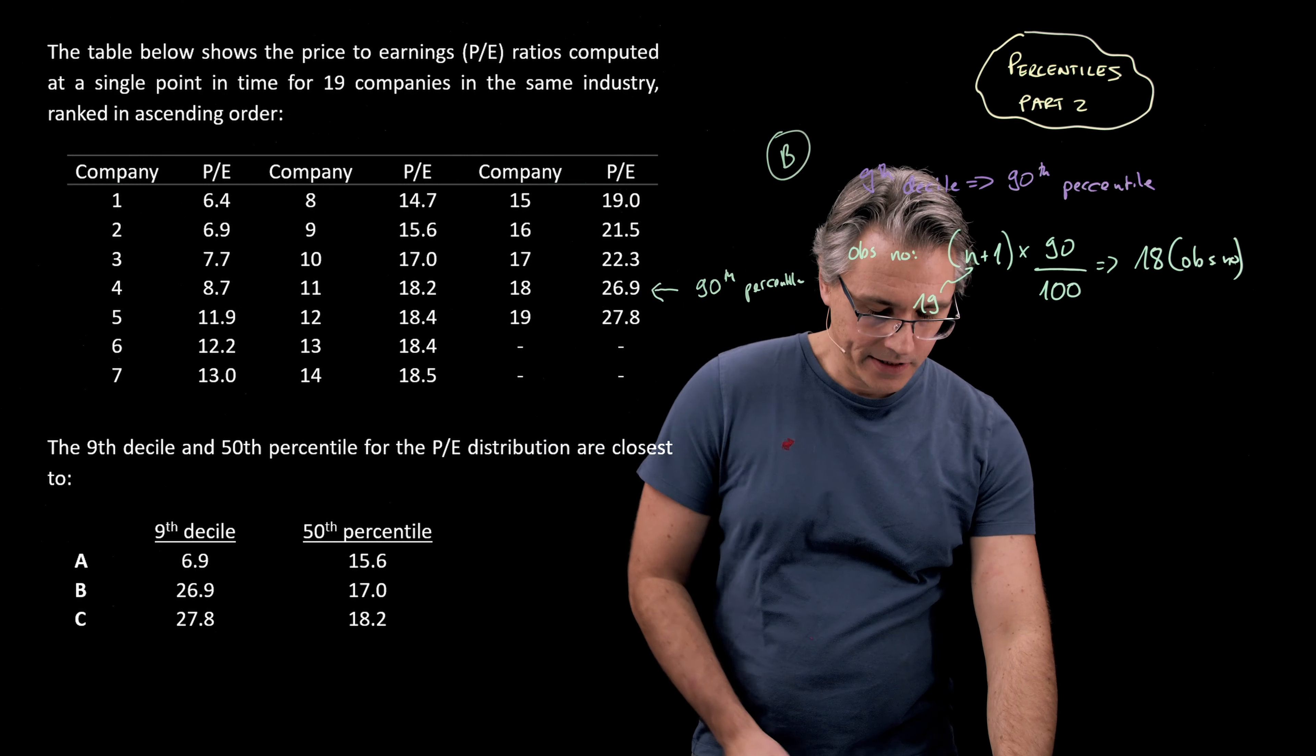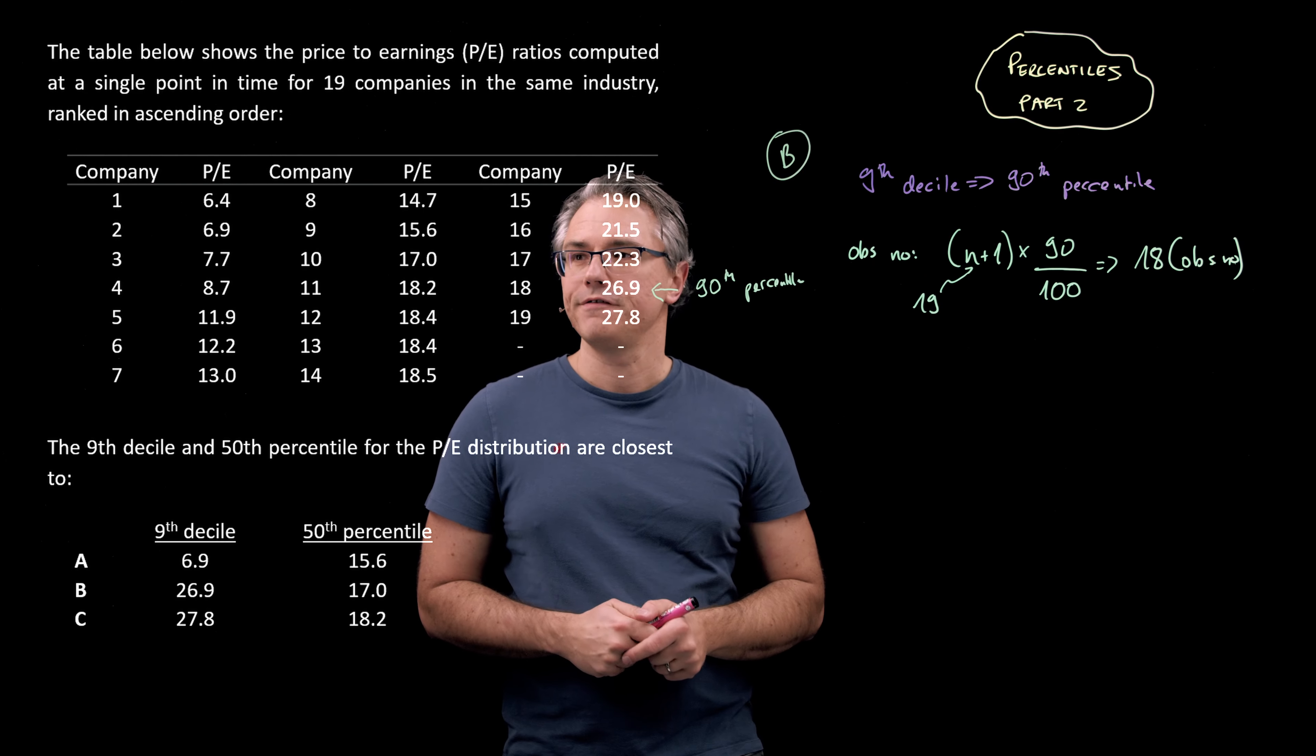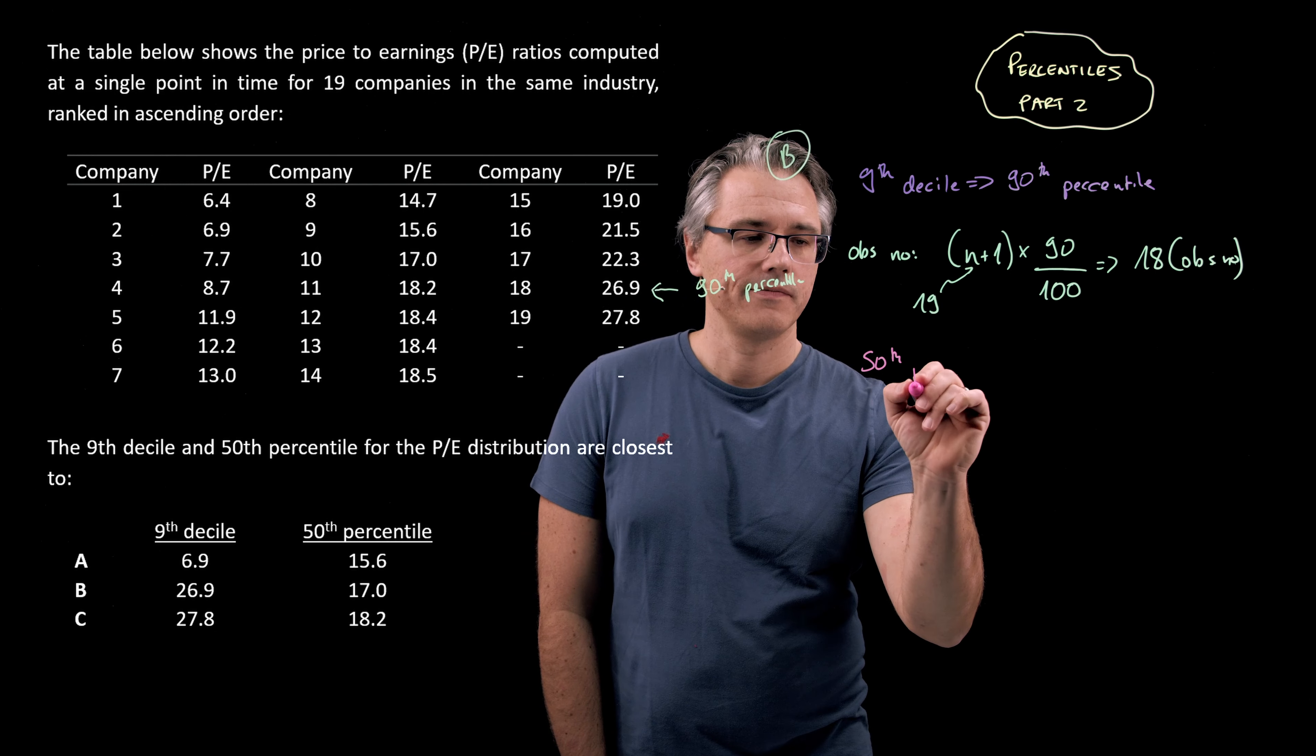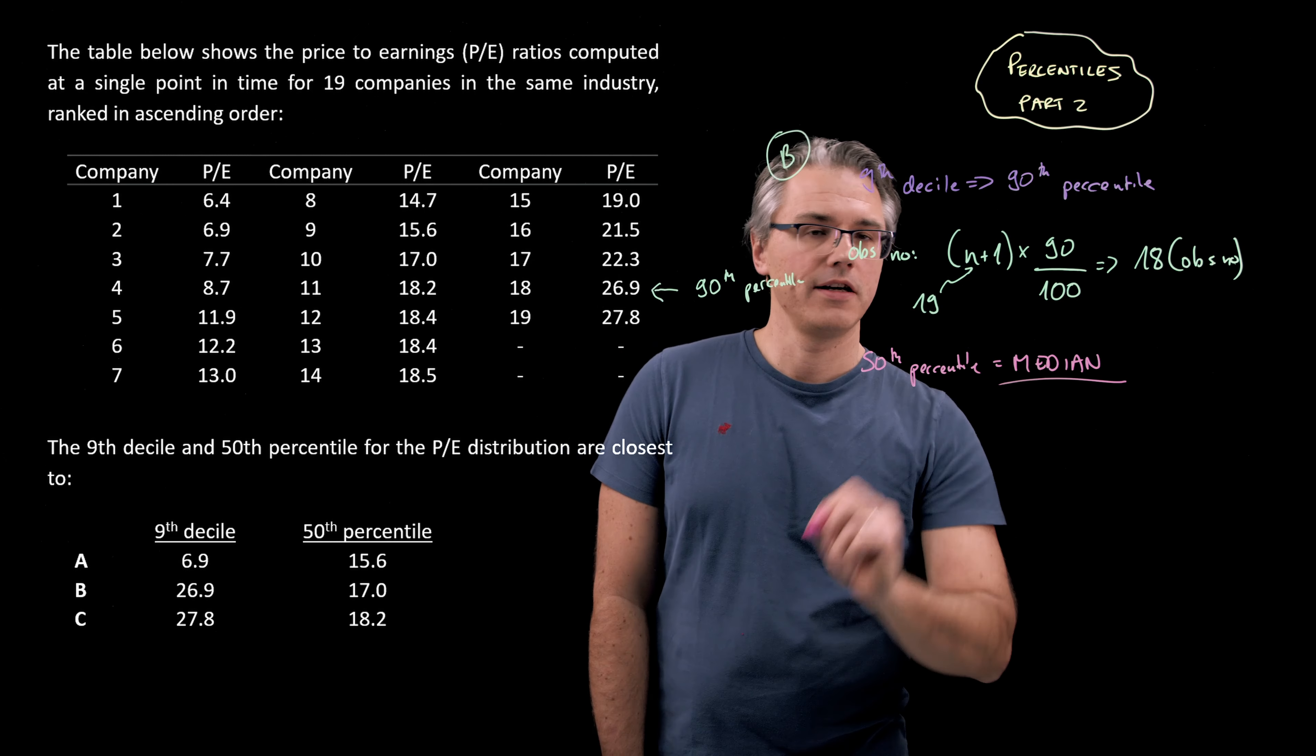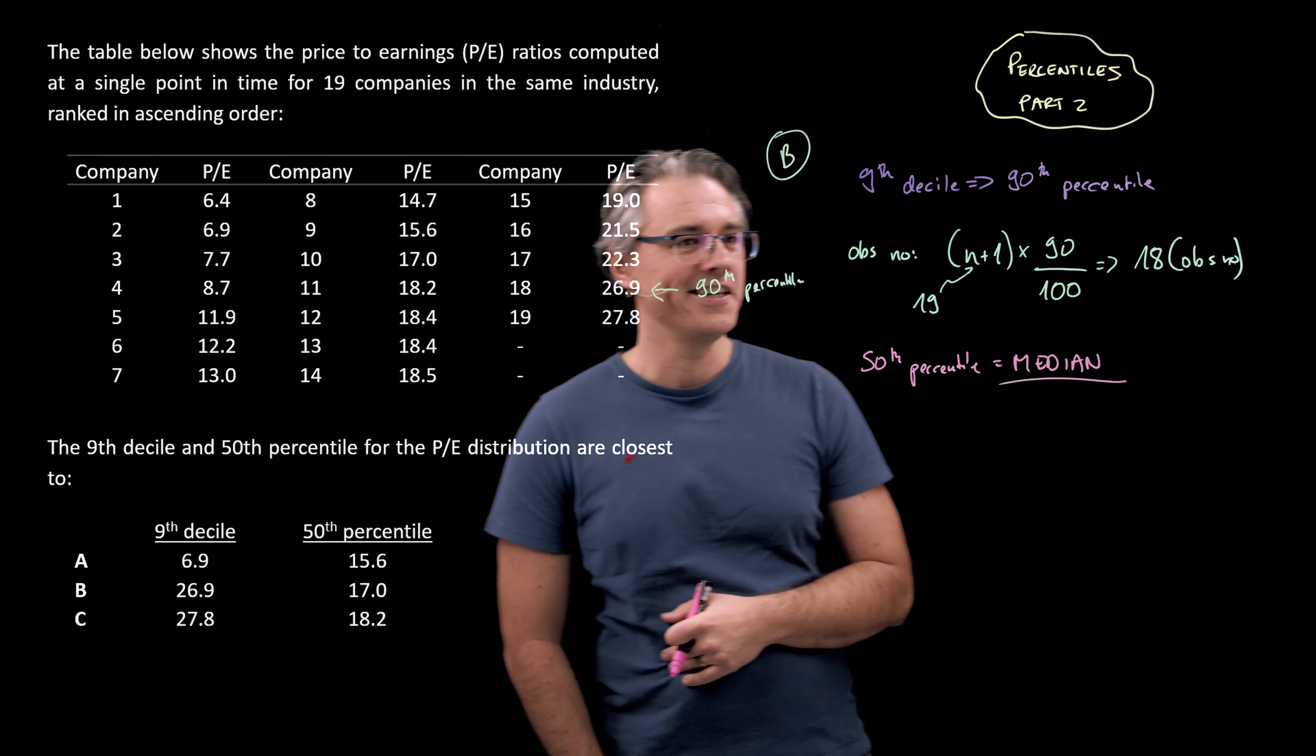However, we're still asked, and let's do this completely fully, for the 50th percentile. Well, the 50th percentile, please note, is the same as the median, because the median divides the population or the observations into two equal halves. Halves are always equal.